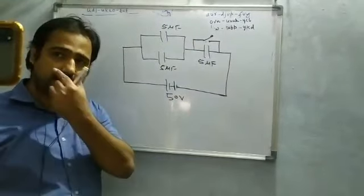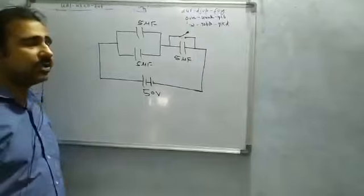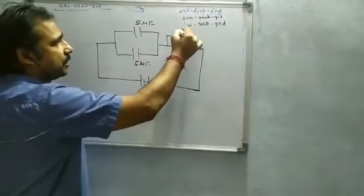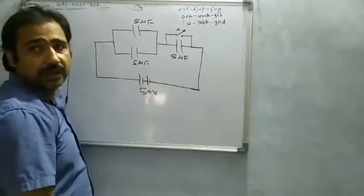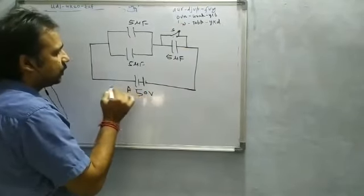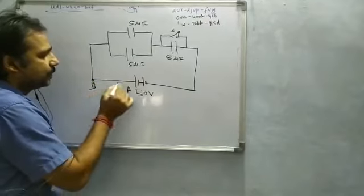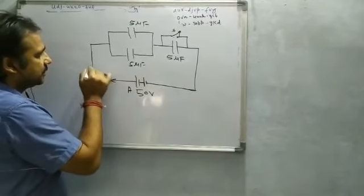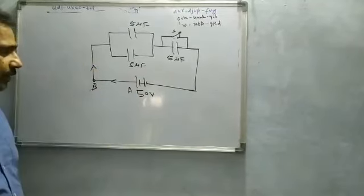So this was the question. The question was that when this switch or key S will be closed, then how much charge will flow through AB? Okay, that's right. What is happening actually?